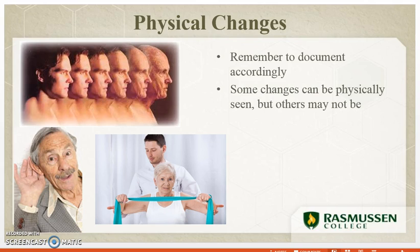Not every system's physical changes will be visible to the naked eye. Some that you may not be able to see include the urinary, digestive, cardiovascular, endocrine, and reproductive systems.